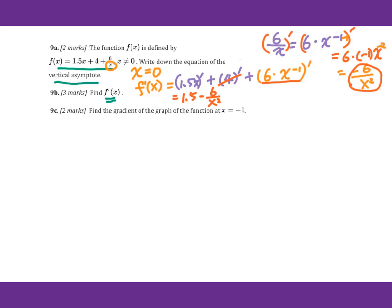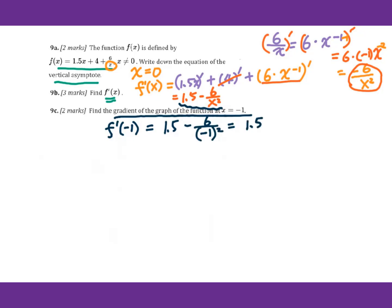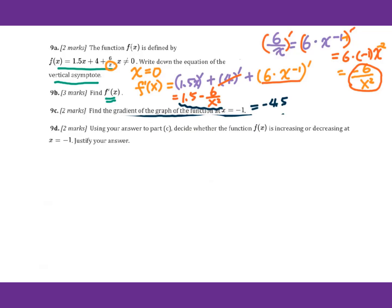Look at 9c: find the gradient of the graph of the function at x equals negative 1. So we plug negative 1 into this derivative function. You will get 1.5 minus 6 over negative 1 squared. That is 1.5 minus 6 equals negative 4.5. Then for 9d, using your answer to part c, decide whether the function f of x is increasing or decreasing. We know f prime of negative 1 equals negative 4.5, which is less than 0. Therefore the graph is decreasing.